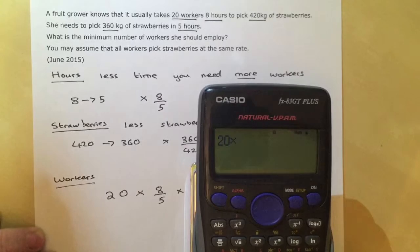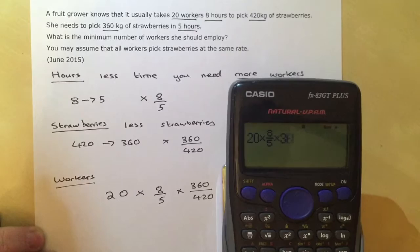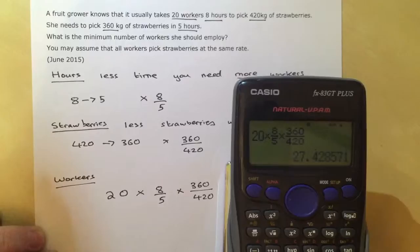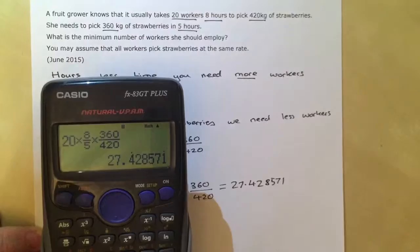So we'll type in 20 times, with the fraction button, 8 over 5 times 360 over 420. Press equals. You might get your answer as a fraction on the screen. Just press the SD button and it will change it into a decimal. So our answer becomes 27.428571.